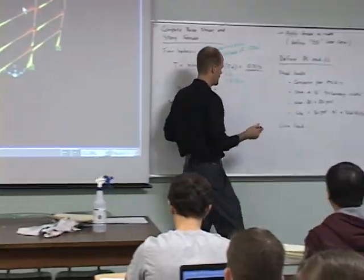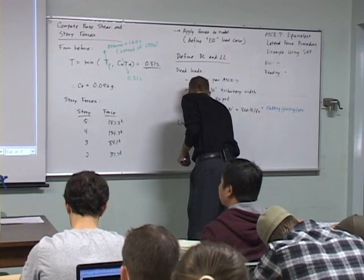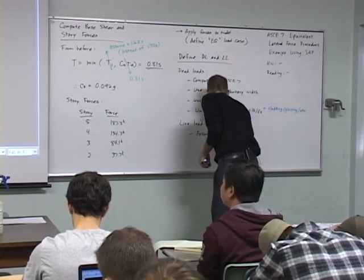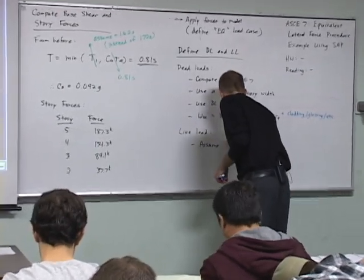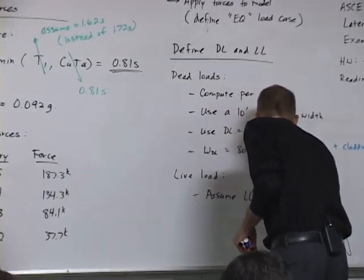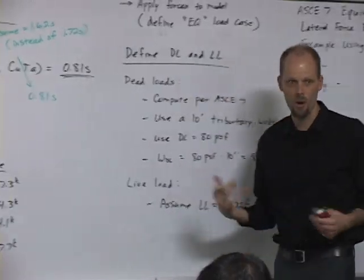So for live load, let's just assume that our W live load, or assume our live load is 50 pounds per square foot, right, and that's for office.